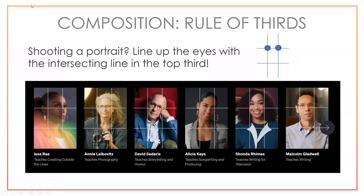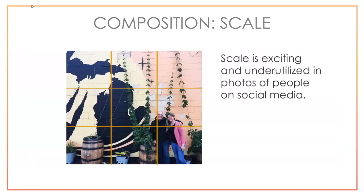For portraits, another Rule of Thirds application: place the eyes right on the top two intersection points — that's a standard portrait trick. Scale is also underutilized. Stepping back and seeing the whole picture gives a big-picture look; in one photo we're in the bottom right corner and it shows the state of Michigan. People always shoot too tight — step back, give bigger shots, and that's a way to stand out.